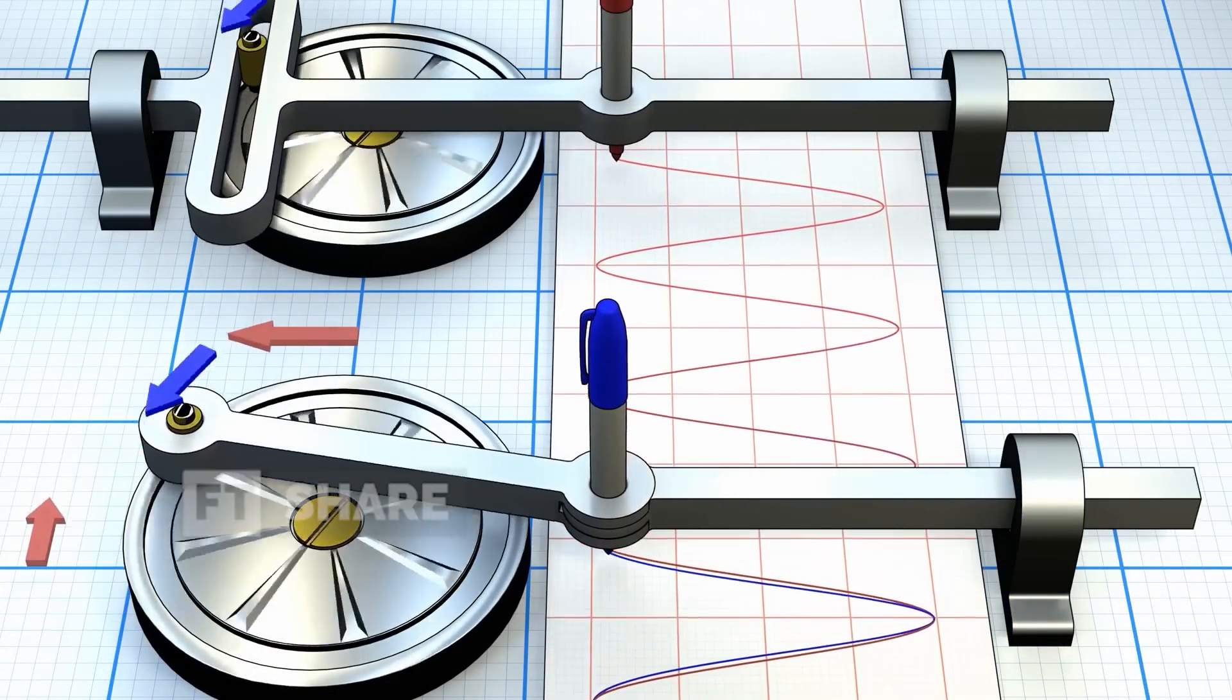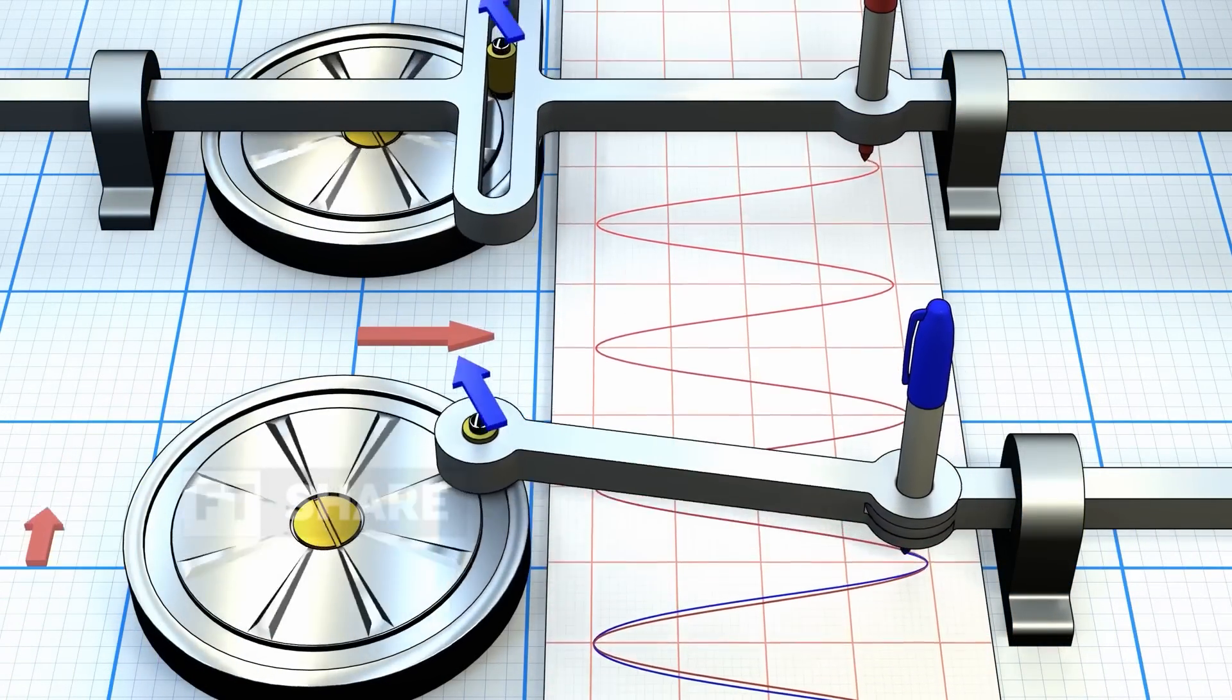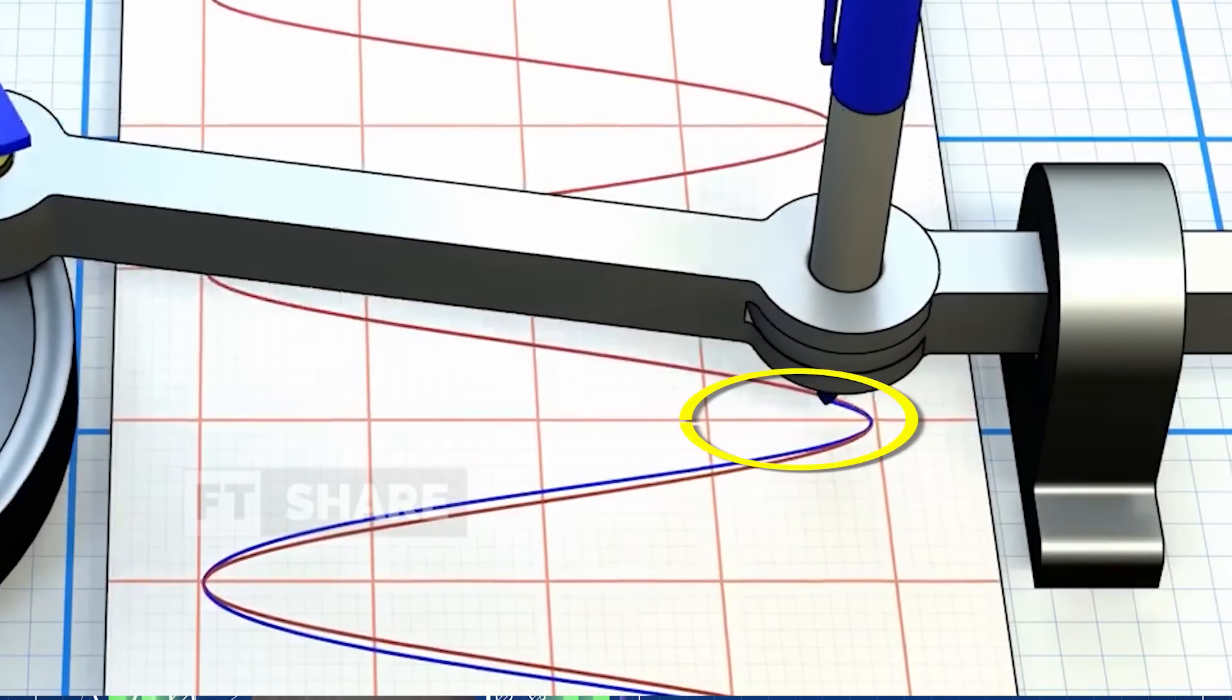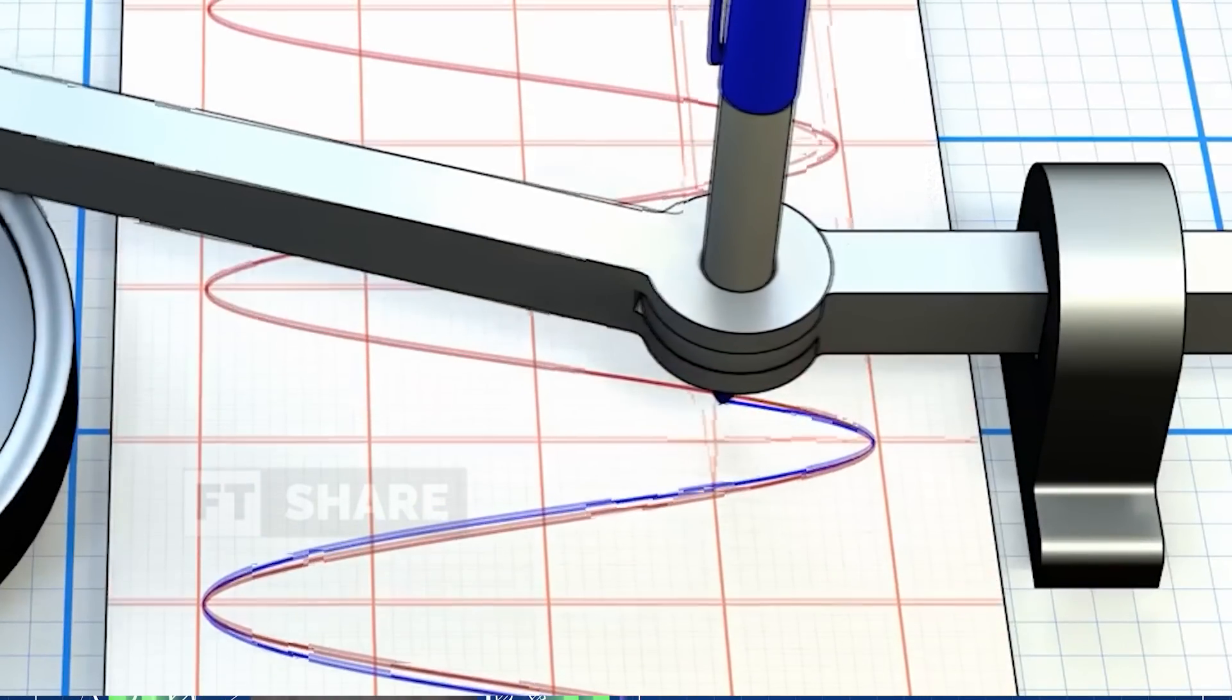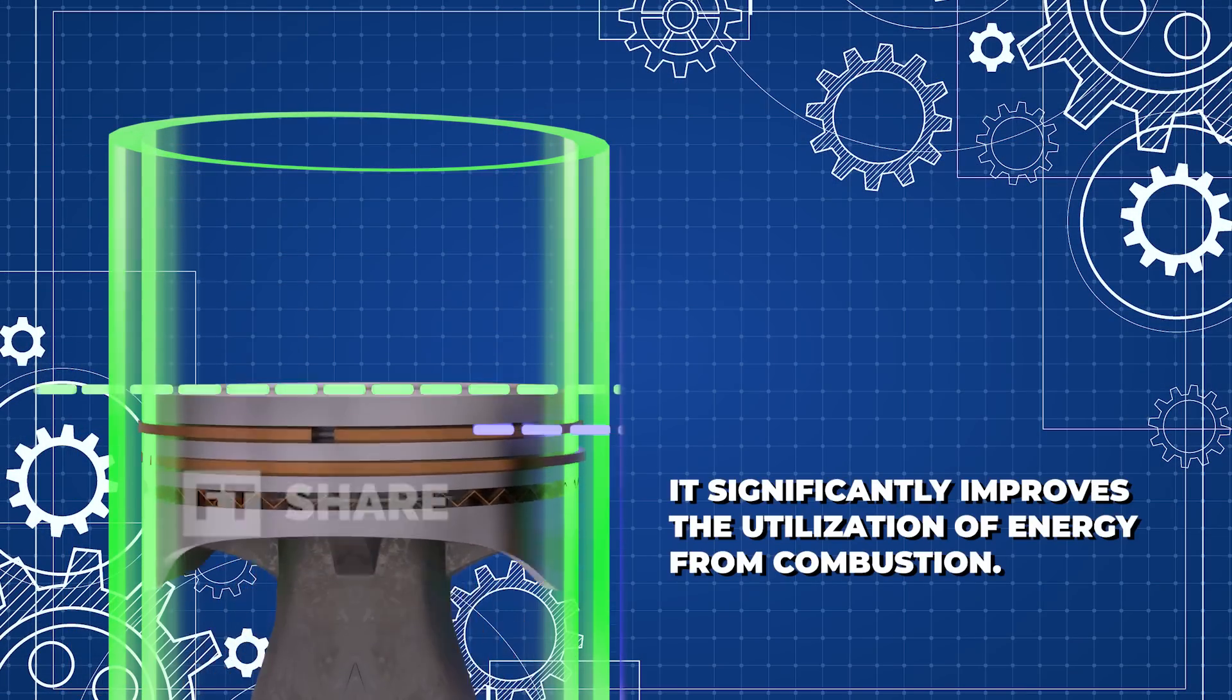Which, as we know, is where the combustion peak occurs with the heaviest mechanical load. By keeping the piston longer at this point, it significantly improves the utilization of energy from combustion.